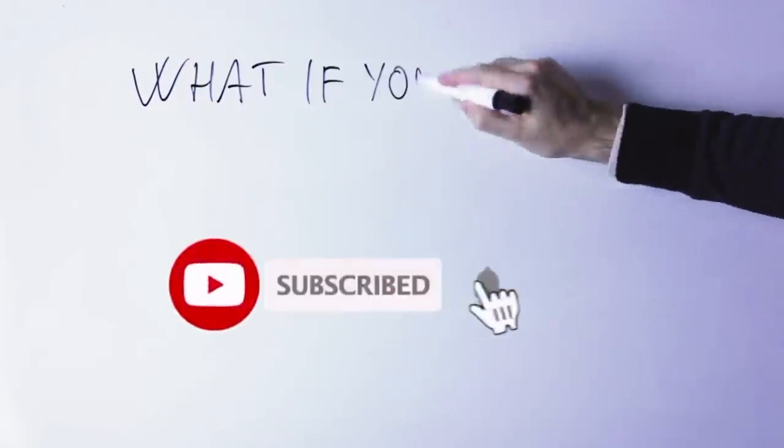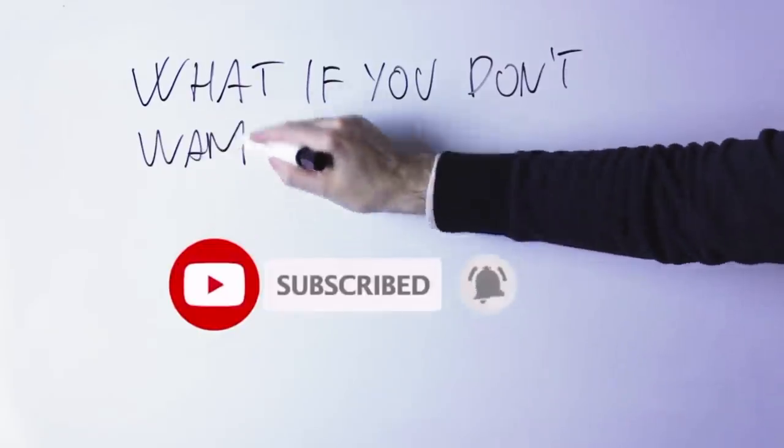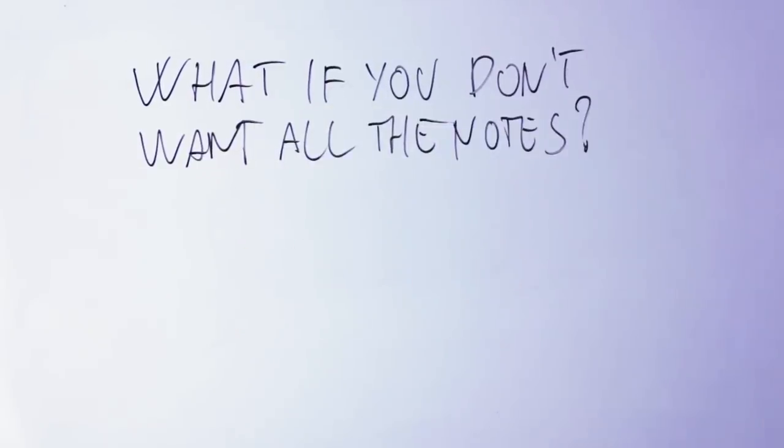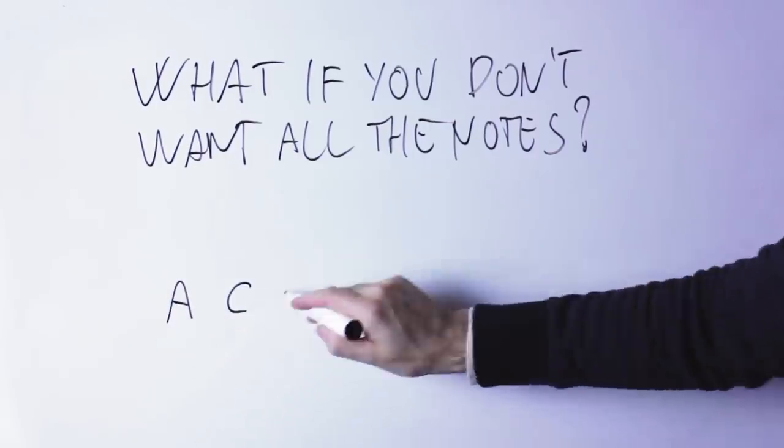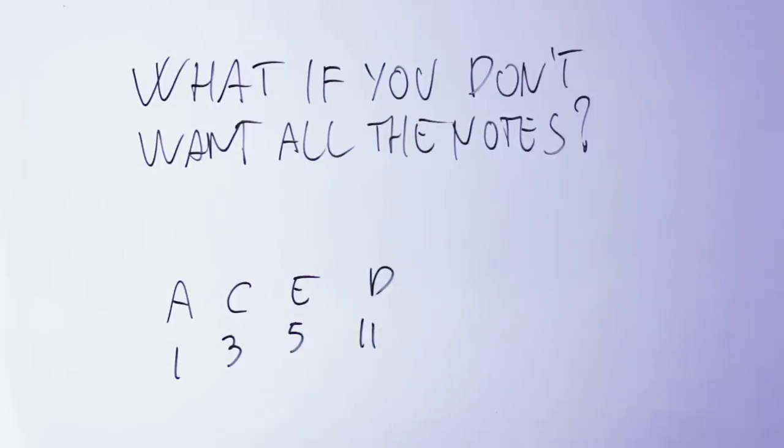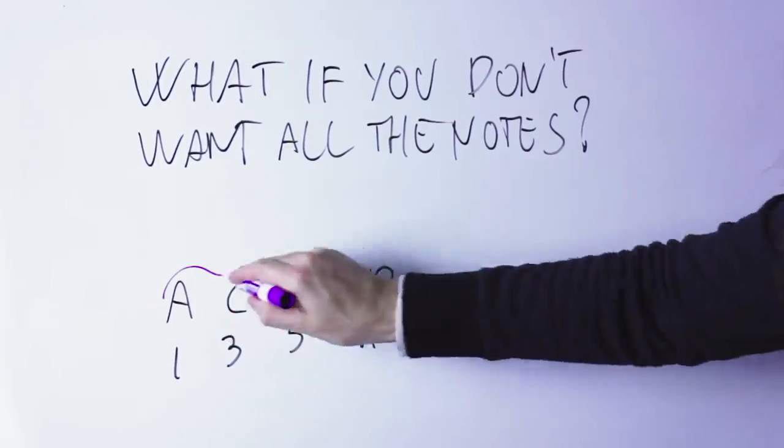Now what if instead you do not want all the notes up to a certain number? What happens, for instance, if you want the notes A, C, E, D, so you want the A minor notes, A, C, E, and D, which is the eleventh, but you don't want the seventh and the ninth.